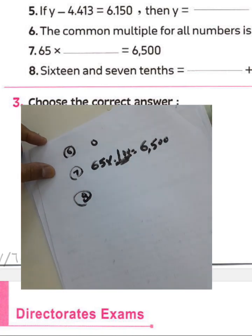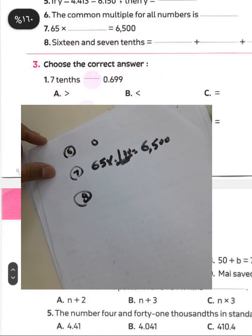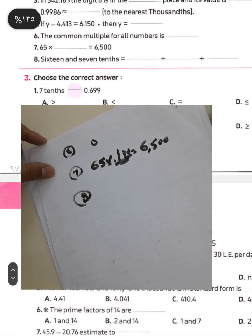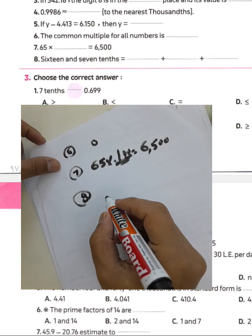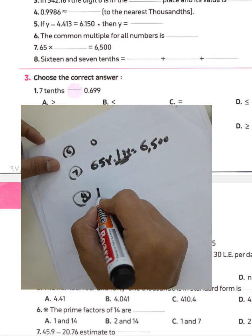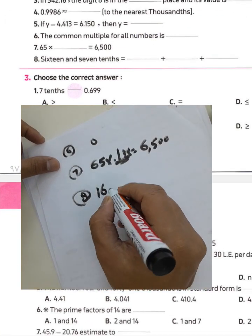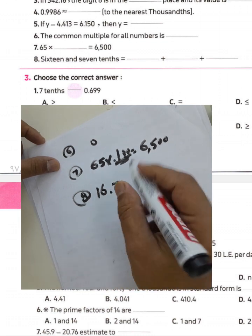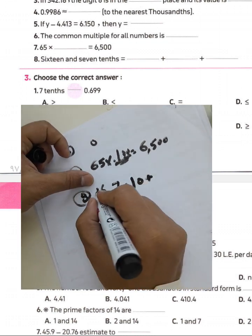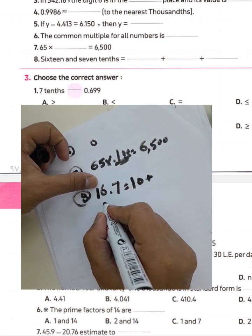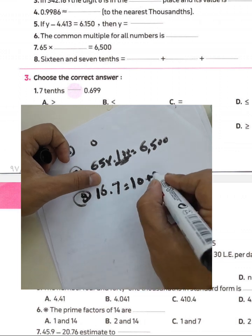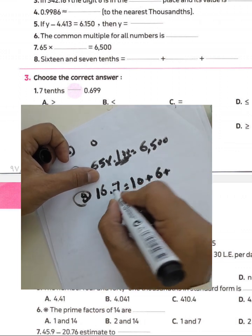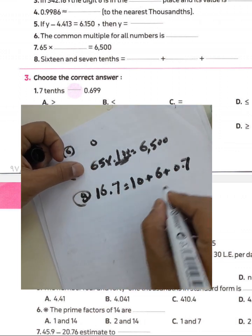Question eight: 16 and seven tenths equals blank plus blank plus blank — write this number in expanded form. We know 16.7: 1 is in the tens place, 6 is in the ones place, and 7 is in the tenths place, so 10 plus 6 plus 0.7.